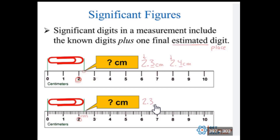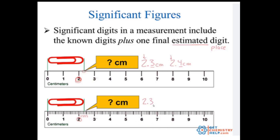So essentially you need to look at your device — what do your markings allow you to be exact to or certain to? And then you have to estimate one digit past that. So let's look at our paper.